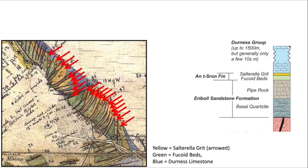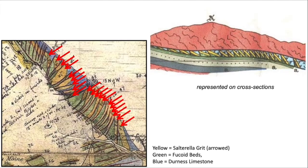This stack of thrust slices involves just this package of stratigraphy: the fucoid beds, the Salterella Grit, and the very base of the Durness limestones. The pipe rock is not involved. On cross sections developed based on Clough's mapping, the pipe rock is the gray unit at depth, broadly folded and not imbricated, but above that are a series of inclined panels picked out by those yellow Salterella Grit layers. The beds are essentially parallel within each thrust slice, and the thrust faults dip more steeply than the bedding. The structure is bound at the top by a roof thrust carrying a thrust sheet of pink basement gneisses, and at the base by a floor thrust.